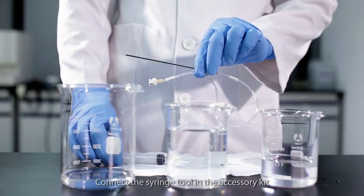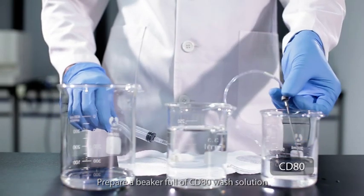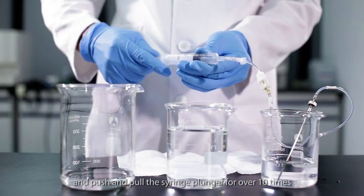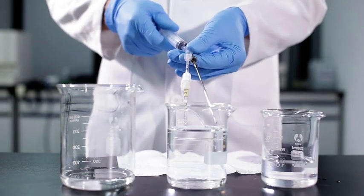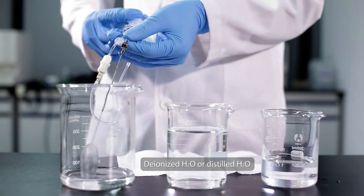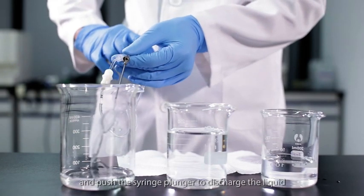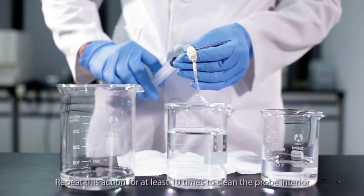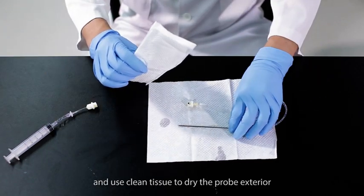Connect the syringe tool in the accessory kit with a quick joint of the aspirate probe. Prepare a beaker full of CD80 wash solution. Emerge the other end of the probe into the beaker and push and pull the syringe plunger for over 10 times. Discharge the liquid in the tube and lift the probe tip above the liquid level. Emerge the probe tip into another beaker filled with deionized water or distilled water. Pull the syringe plunger to aspirate liquid. Put the probe into another empty beaker and push the syringe plunger to discharge the liquid. Repeat this action for at least 10 times to clean the probe interior. Disconnect the probe assembly from the syringe connector. Remove the leftover liquid and use clean tissue to dry the probe exterior.